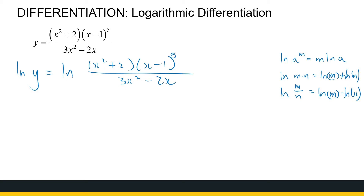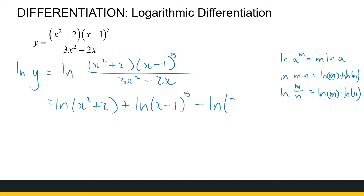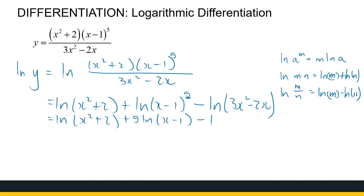Using all those properties, this gives me ln(x² + 2) plus ln(x − 1) to the power 5, minus ln(3x² − 2x). Now I can do one more thing: bring that exponent of 5 to the front, giving ln(x² + 2) plus 5·ln(x − 1) minus ln(3x² − 2x).